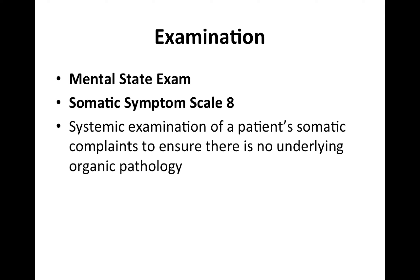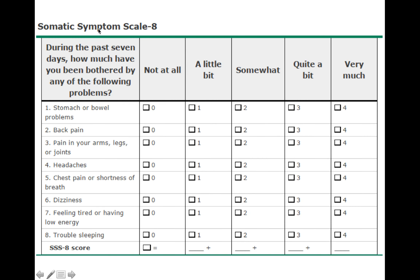On examination, you want to do a mental state exam, the somatic symptom scale SSS-8, and a systematic examination of the patient's somatic complaints to ensure there is no underlying organic pathology. The somatic symptom scale has five potential answers: not at all, a little bit, somewhat, quite a bit, and very much. The question asks: during the past seven days, how much have you been bothered by at least one of the following problems? — stomach or bowel problems, back pain, pain in your arms, legs, or joints, headache, chest pain or shortness of breath, dizziness, feeling tired or having low energy, trouble sleeping.